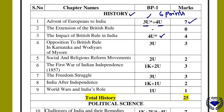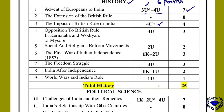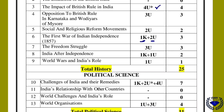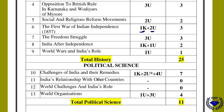Social and religious reform movements carry a two-mark question. The first war of Indian independence has one objective knowledge-based question and a two-mark question, totaling three marks from that chapter. The freedom struggle carries three marks. India after independence has one knowledge-based objective and one two-line question worth two marks. The total for the history section is 25 marks.